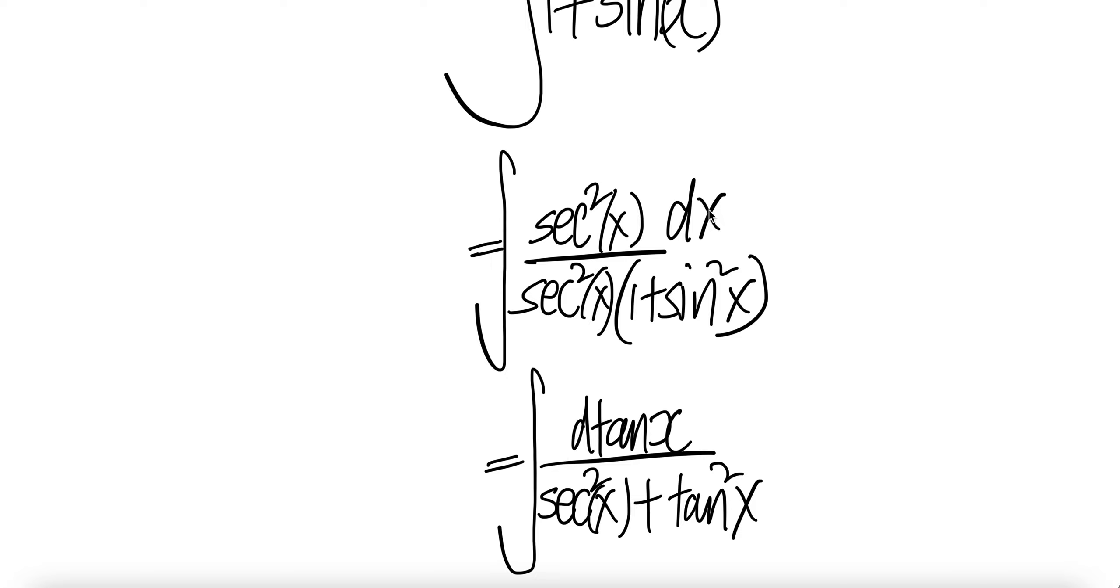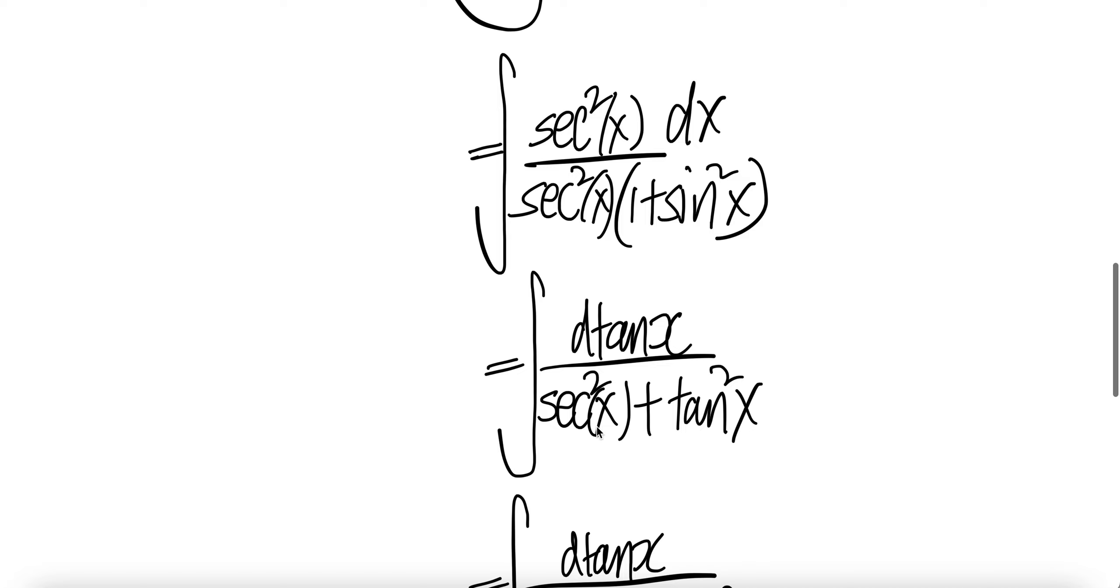Derivative of tangent x is sec squared x dx. Distribute that sec squared x with 1. And then this, you get tangent squared x because sec squared x is 1 over cosine squared x. Times sine squared x is tangent squared x.